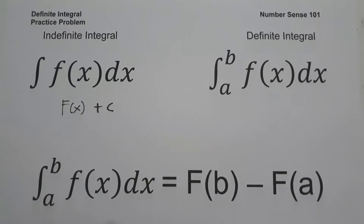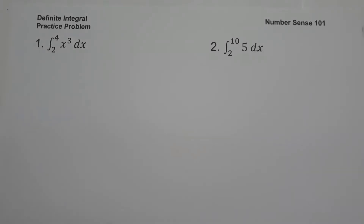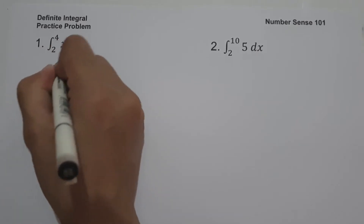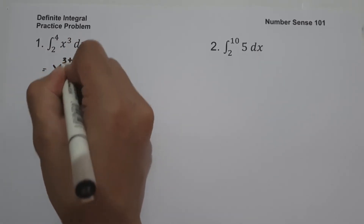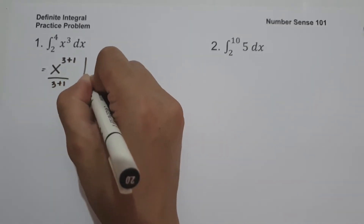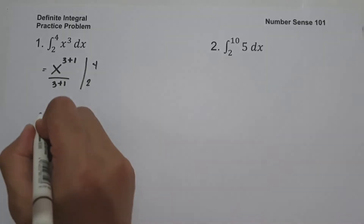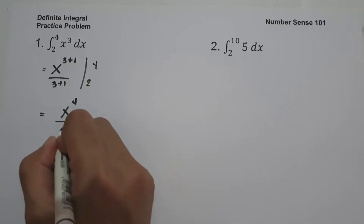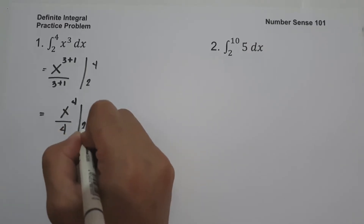For example 1, what is the anti-derivative of x cubed dx evaluated from 2 to 4? The first step is to find the anti-derivative of x cubed. Using the power rule, that gives us x raised to 3 plus 1 over 3 plus 1, which simplifies to x raised to the 4th over 4, evaluated from 2 to 4.